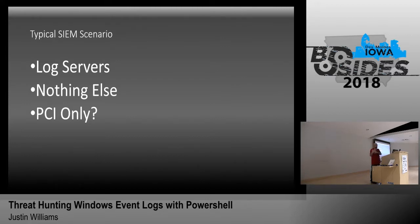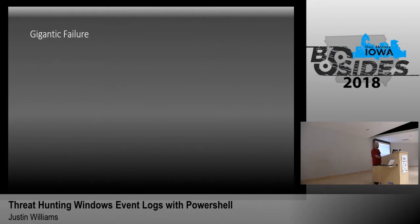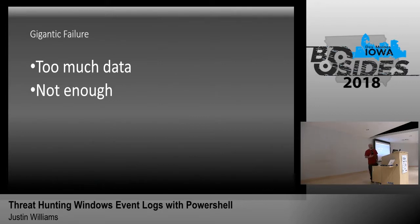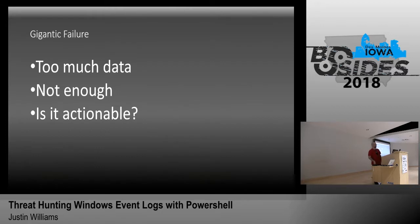In some instances we're only looking at our PCI compliance areas — that's where the money is, that's where our biggest fines are, so that's where the organization wants to invest and protect. When you look at SIEM licensing costs getting out of control, you end up putting all your costs into that and ignoring everything else. This adds up to a gigantic failure: if you try to catch everything from the start you end up with too much data and no value; if you're only looking at PCI environments you're not getting enough data for a big picture; and the data you are getting may not be actionable.